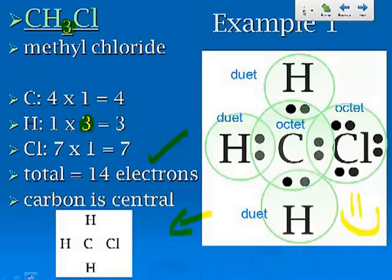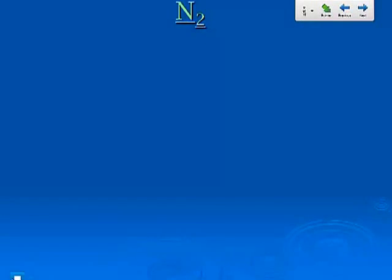Now when we write the Lewis dot structure, we write it like this: hydrogen, hydrogen, hydrogen, and then chlorine. We write every bond as a line, and the lone pairs get written as dots.